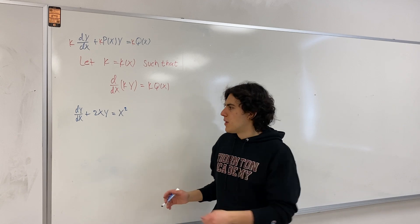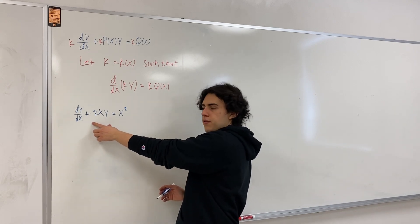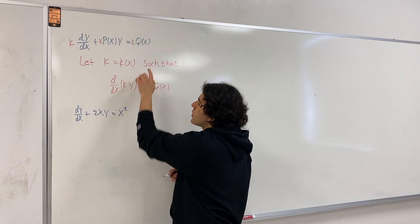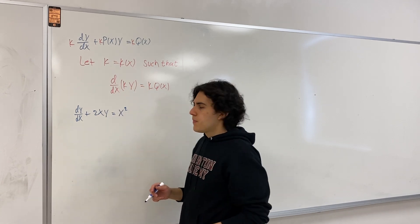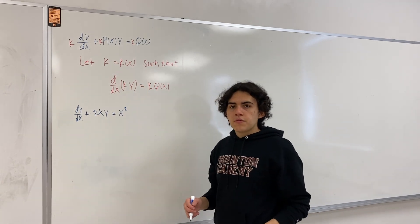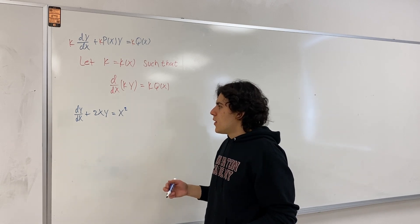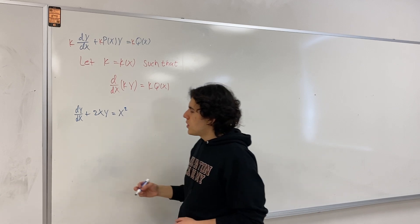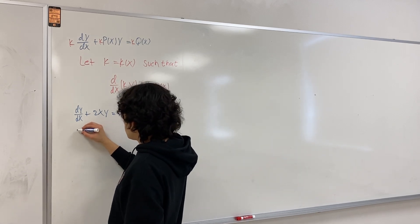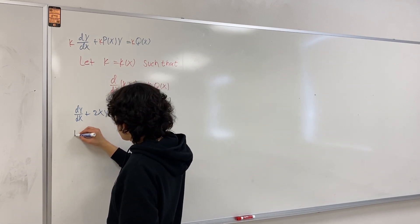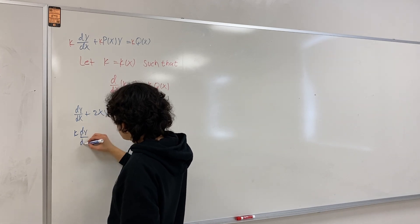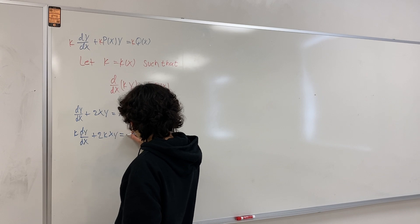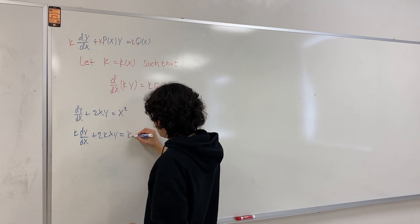Now let's solve a very simple example. Let's say we have this differential equation. Notice p of x is going to be equal to 2x and q of x equals x squared. We're going to use the method of the integrating factor to solve this. There is some k such that the derivative property is true, so we multiply both sides of the equation by k first. And we get k times dy/dx plus 2kx times y equals k times x squared.